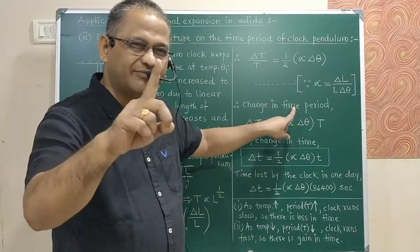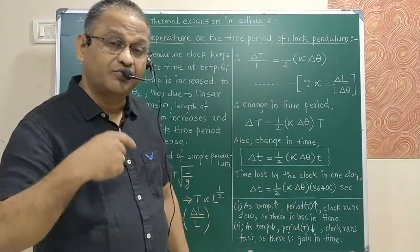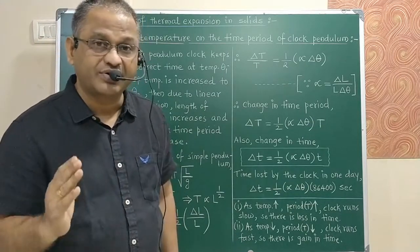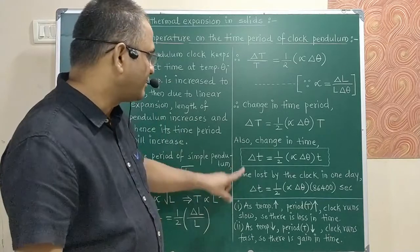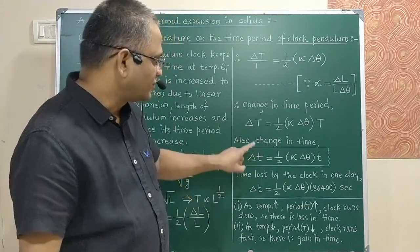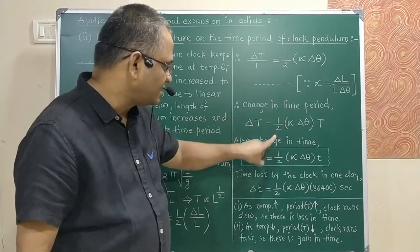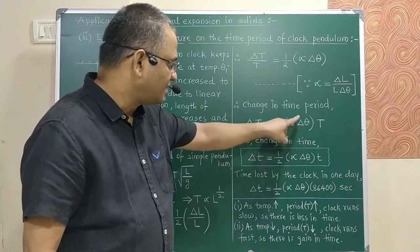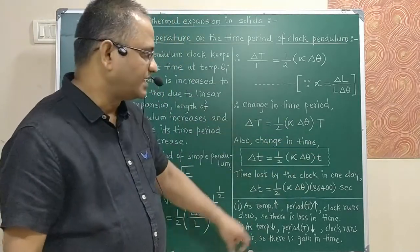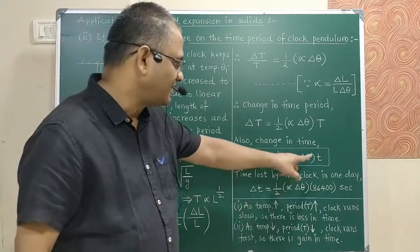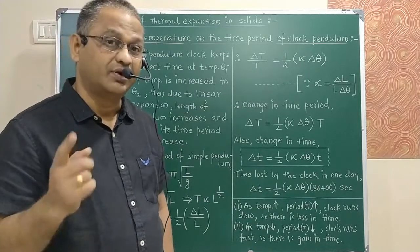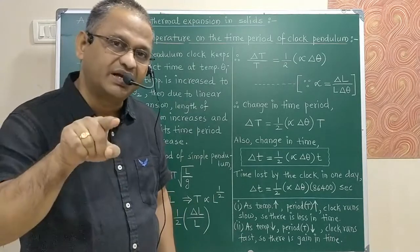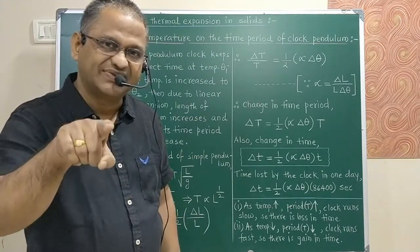To find the change in time for one day due to the change in temperature, we apply the formula: delta-T = (1/2) × alpha × delta-theta × T, where T is the total time interval. For one day, T = 24 × 3600 = 86,400 seconds.